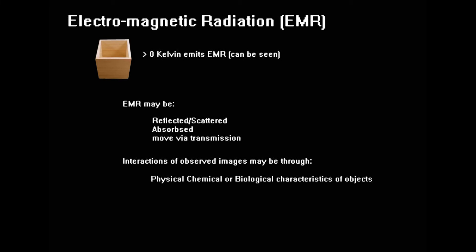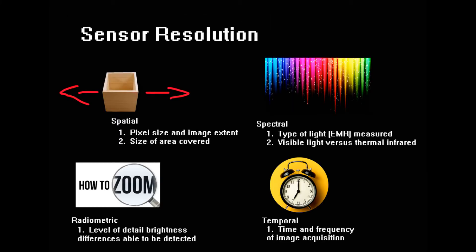There are four types of sensor resolution. These are spatial, the pixel size and image extent, or the size of an area covered. Spatial is just area. Spectral, which is the type of light or the EMR measured, like visible light versus thermal infrared. It may just be the pixel color, more or less, either of the RGB values.